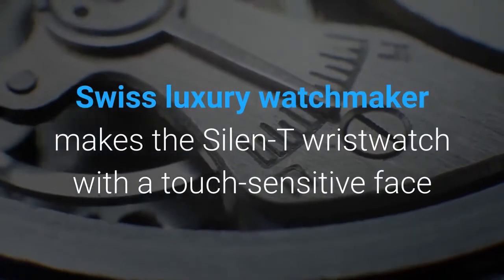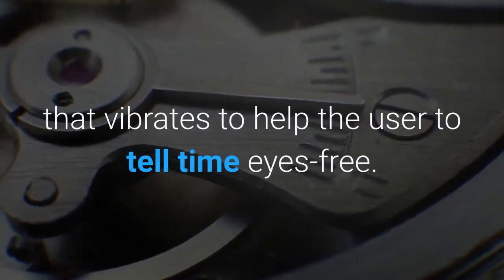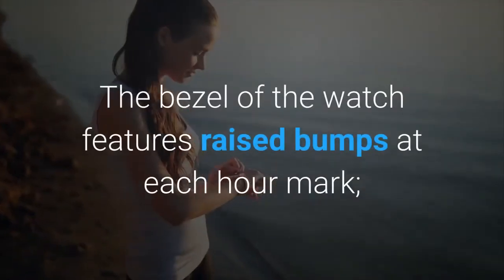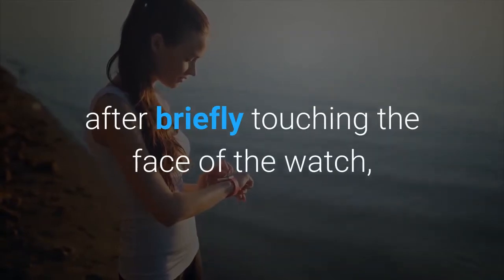Swiss luxury watchmaker makes the Silent T wristwatch with a touch-sensitive face that vibrates to help the user tell time eyes-free. The bezel of the watch features raised bumps at each hour mark. After briefly touching the face of the watch, the wearer runs a finger around the bezel clockwise.